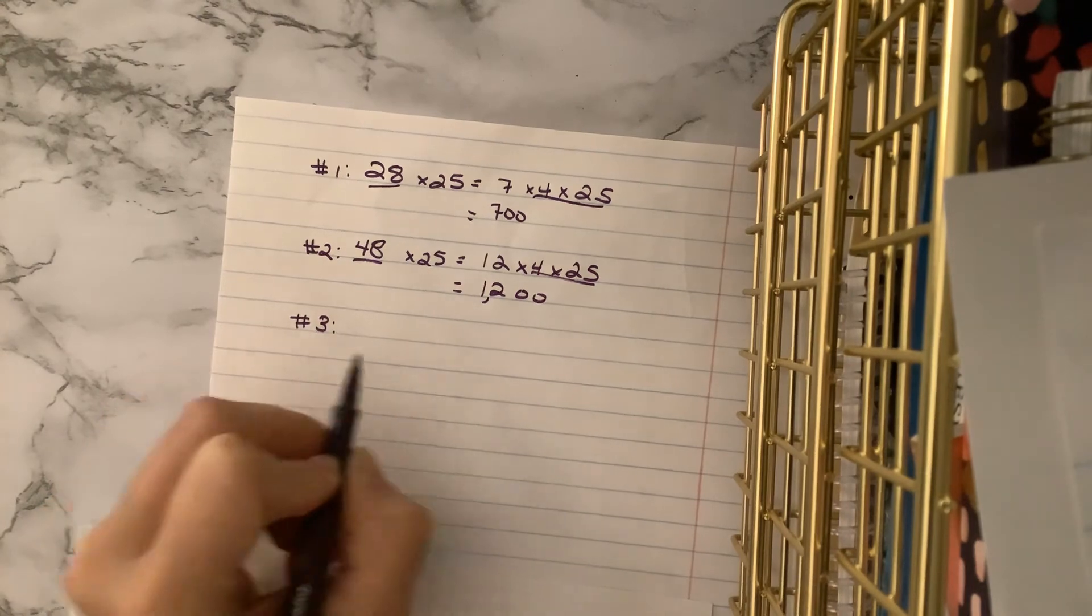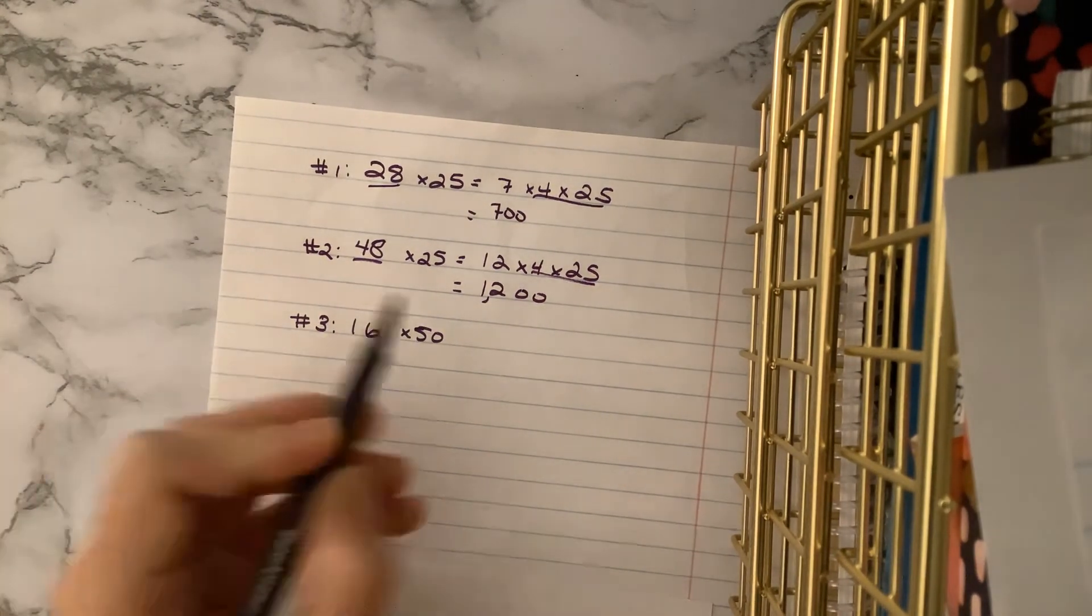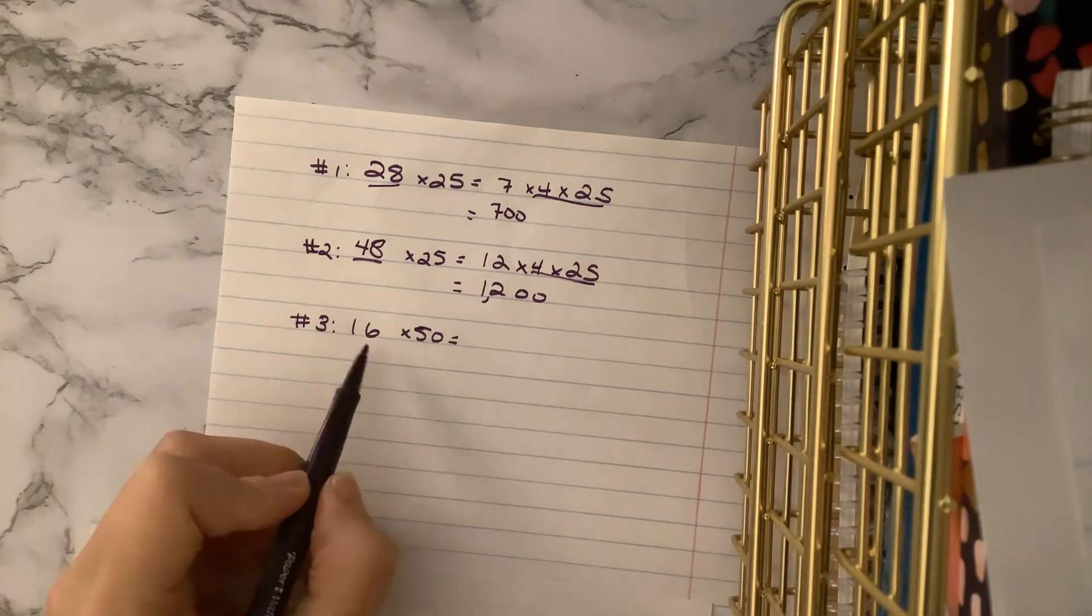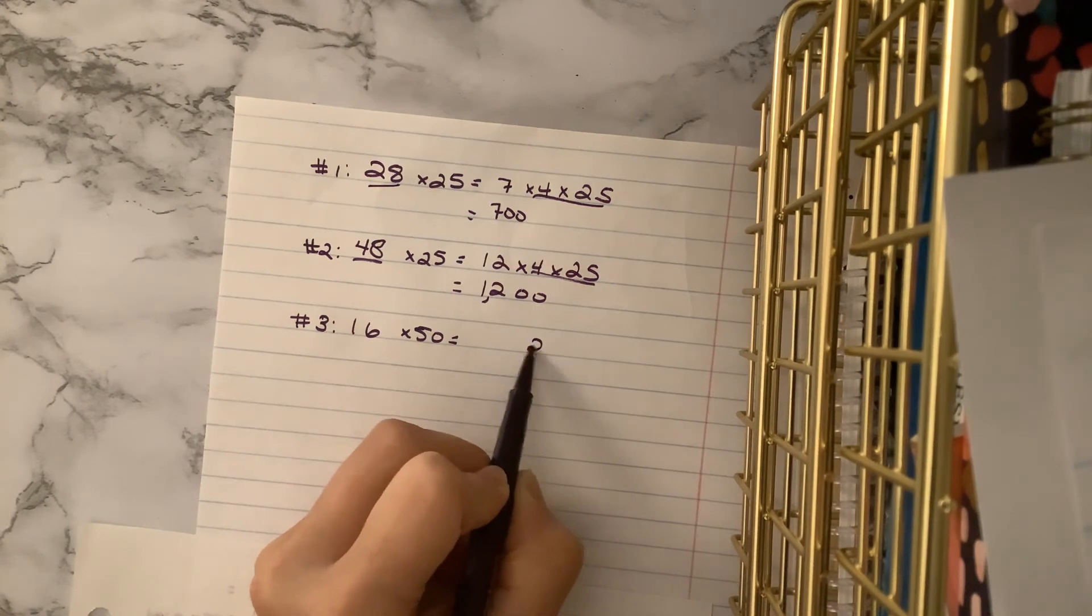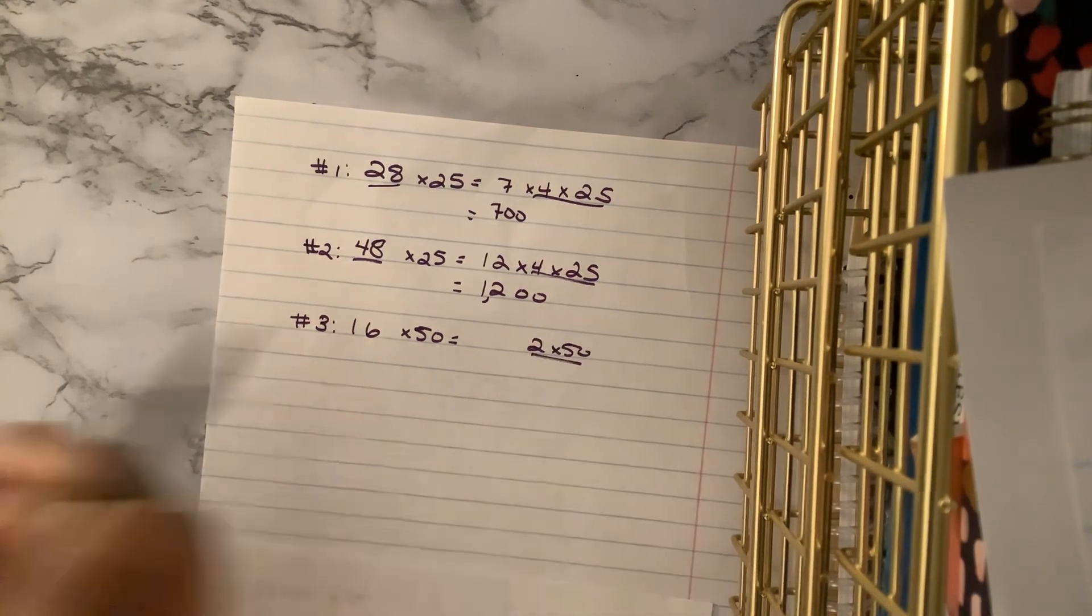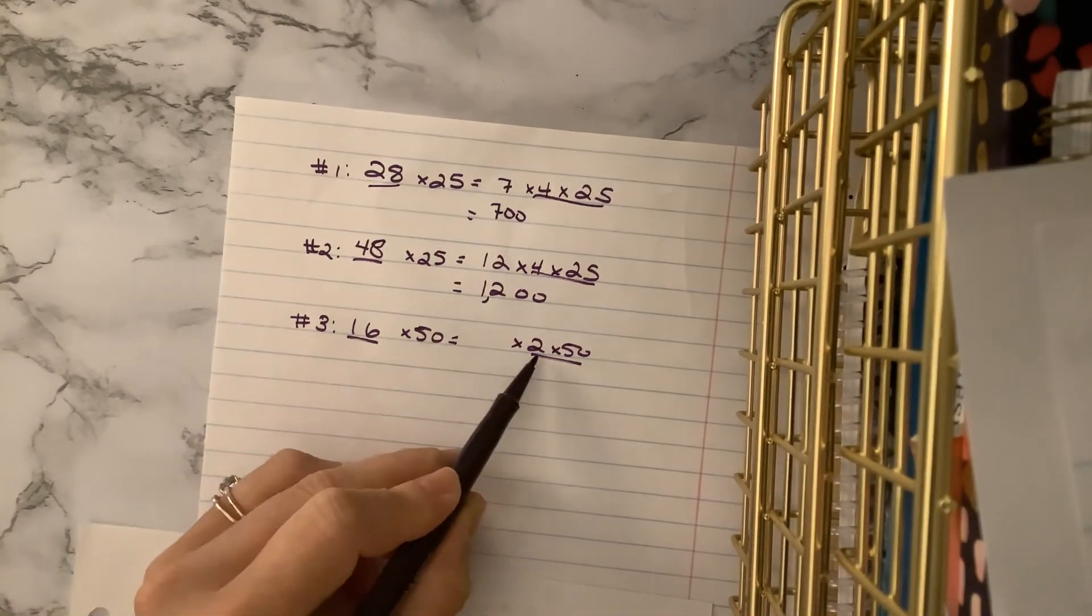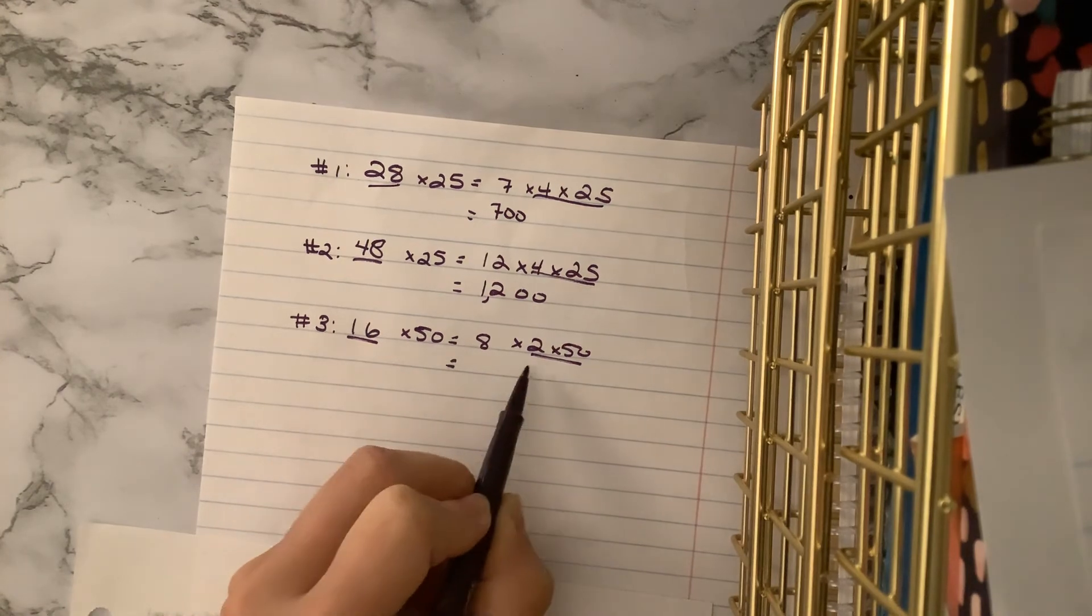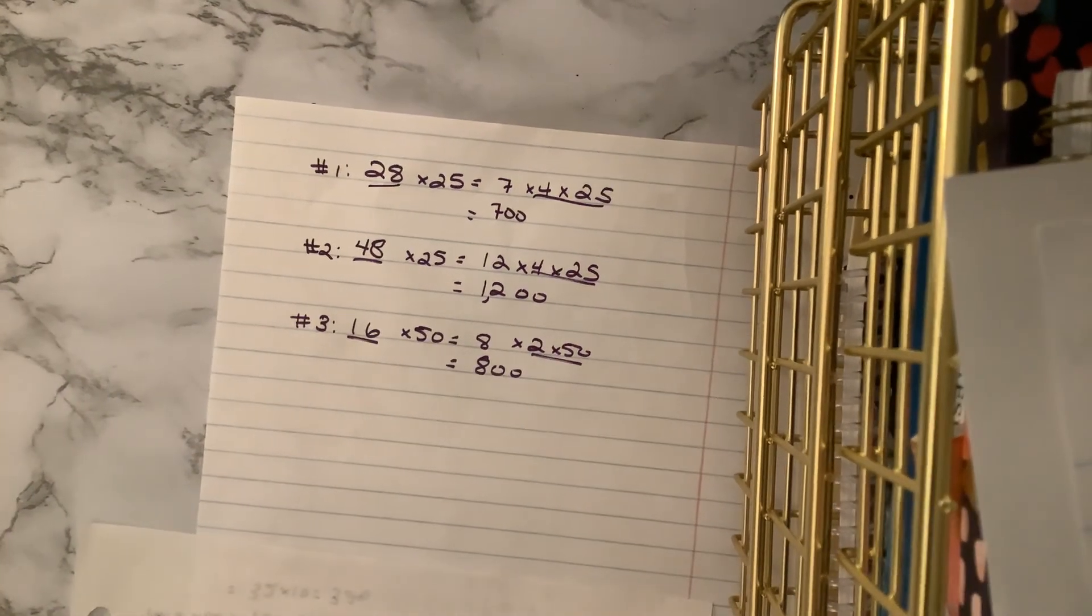Let's try just one that's times 50. So remember, in this case, we're not going to find 4 times 50. We want to find 2 times 50, because that's what's going to get us 100. So looking here, what times 2 is 16? And you should find 8. 8 times 100 is 800. All right, 5th graders.